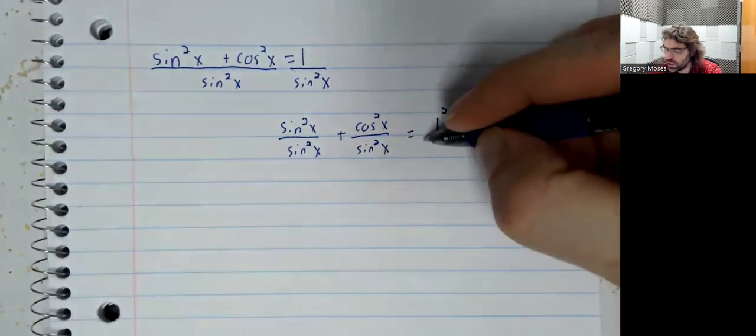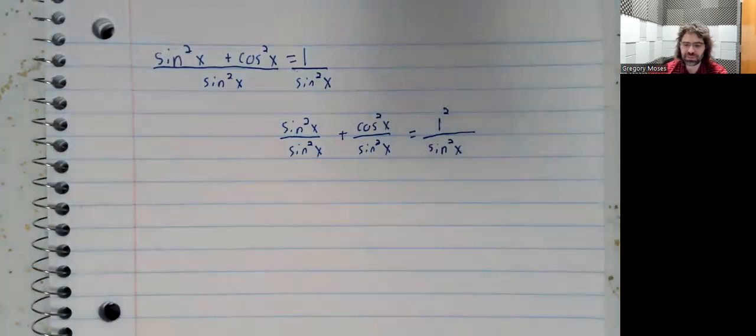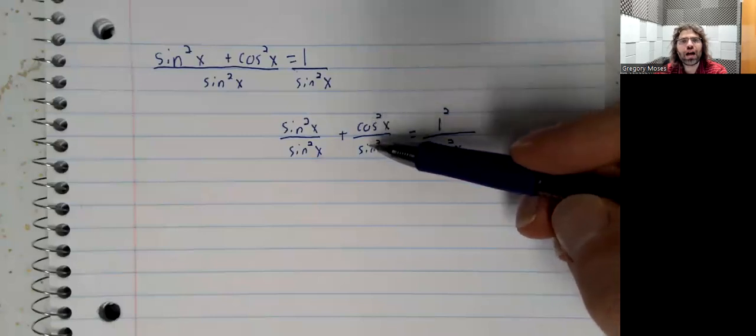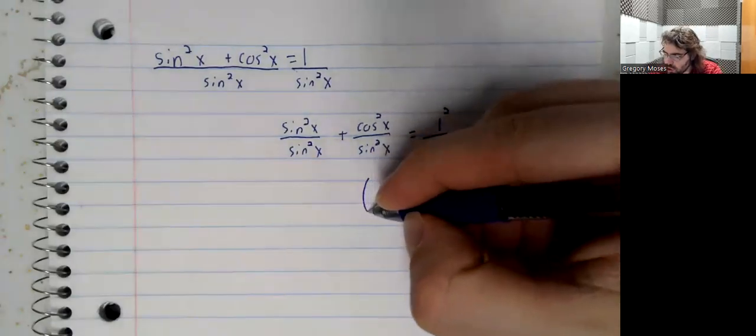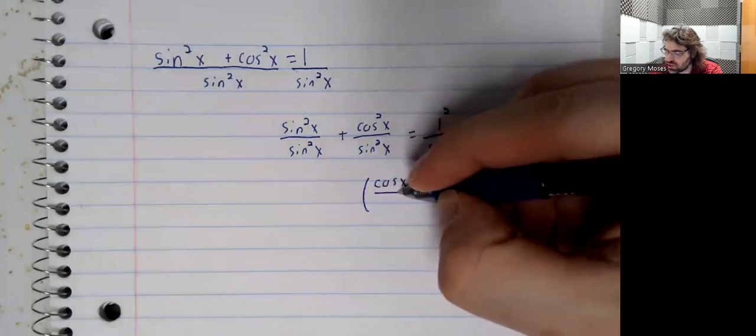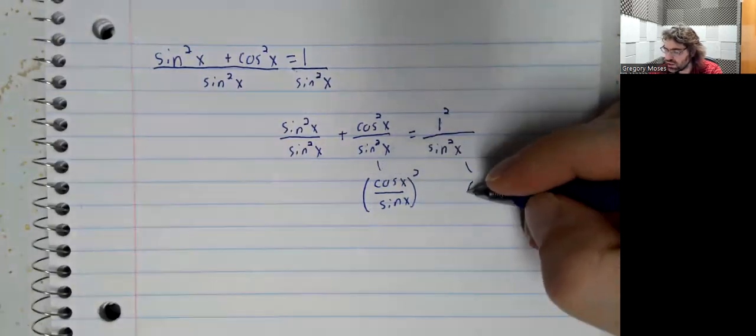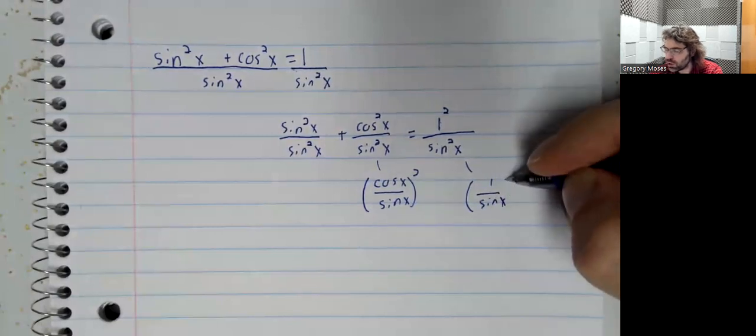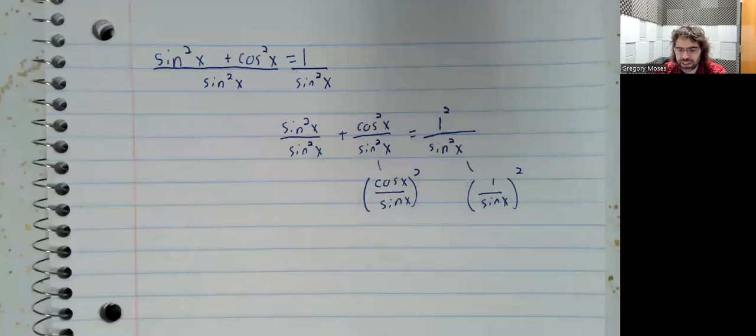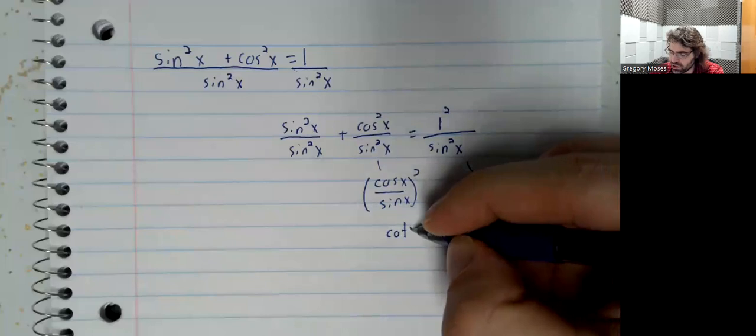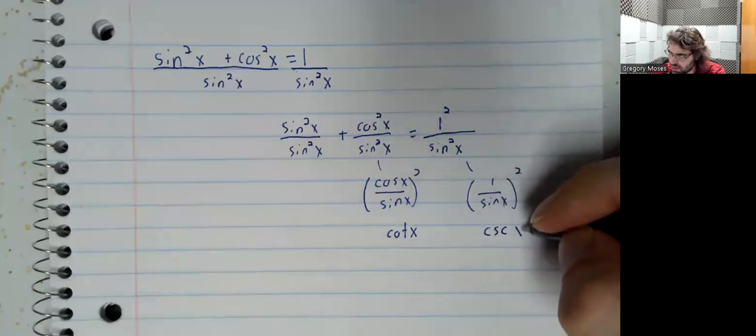And let's write that one is one squared. That's certainly a true statement. And now if we have a square divided by a square, we can write those as single squares. This is the cosine of x over the sine of x squared. The cosine over the sine is the cotangent. One over the sine is the cosecant.